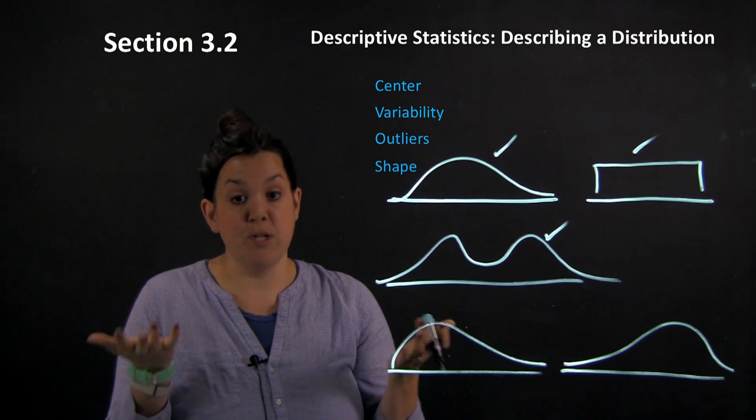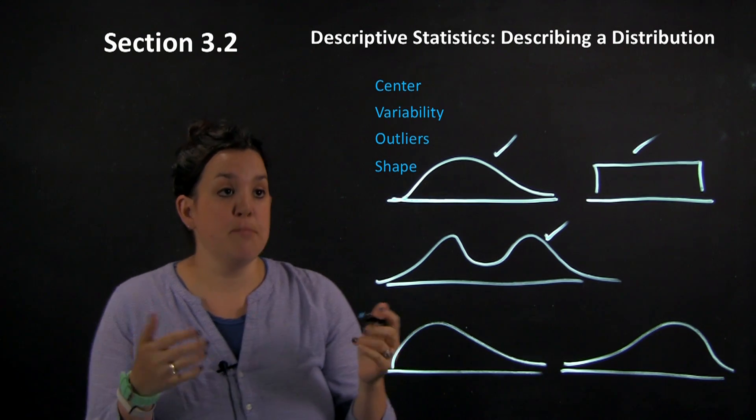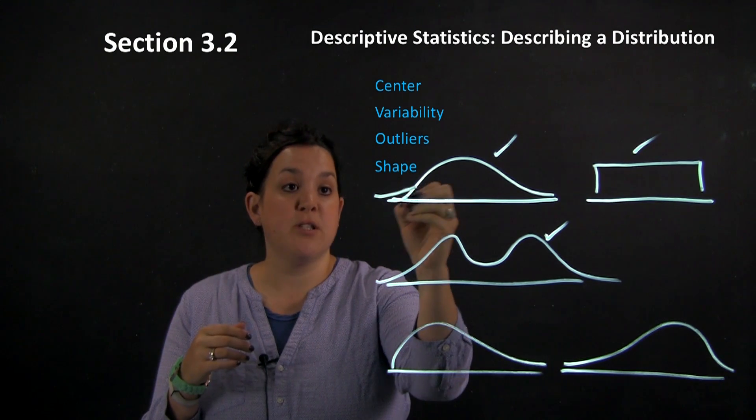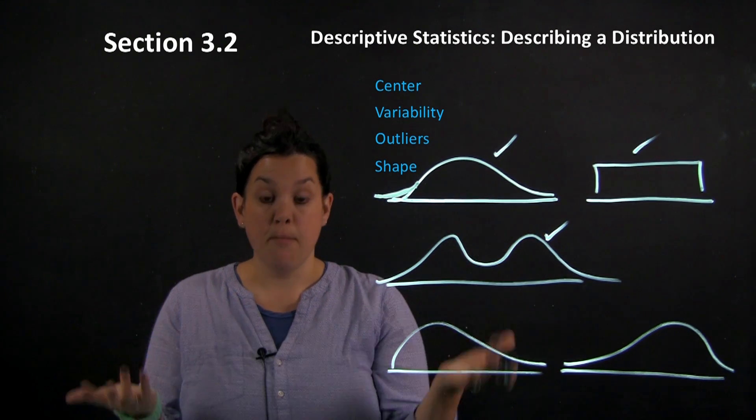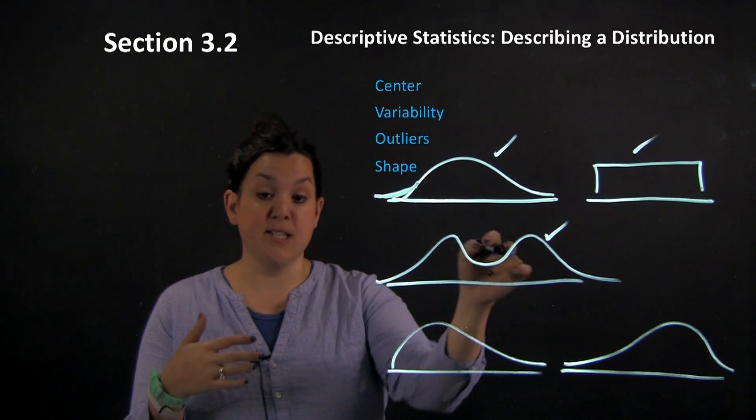That means symmetric wouldn't be a sufficient descriptor of shape. So we also have to deal with, besides symmetry, maybe how many peaks there are.